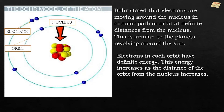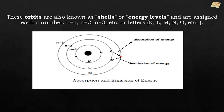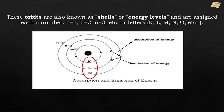Bohr stated that electrons move around the nucleus in circular paths or orbits at definite distances from the nucleus, similar to planets revolving around the sun. Electrons in each orbit have definite energy, which increases as the distance of the orbit from the nucleus increases. These orbits are also known as shells or energy levels, assigned numbers n = 1, 2, 3, and so forth, or letters K, L, M, N, and so forth. As long as the electron stays in its given orbit, there is no absorption or emission of energy.